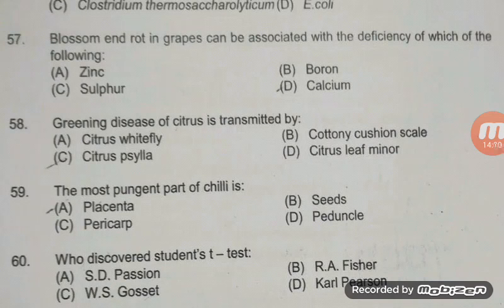Who discovered the T-test? T-test was discovered by W.S. Gosset — option C is right. Poisson distribution was discovered by S.D. Poisson. R.A. Fisher gave the null hypothesis, Z-test, and ANOVA. Carl Pearson gave chi-square test, standard deviation, and coefficient of variation.